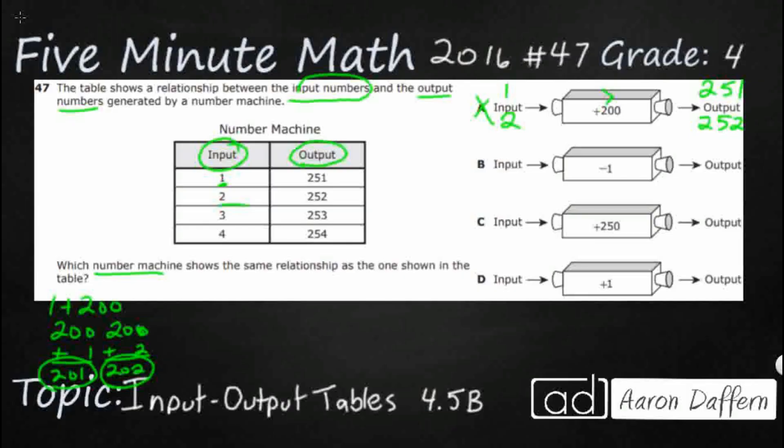Now, this one doesn't work, B. If you're just looking at it, you're like, obviously, 1 minus 1, that's going to equal 0, right? And 2 minus 1, that equals 1. That's not even anywhere close.